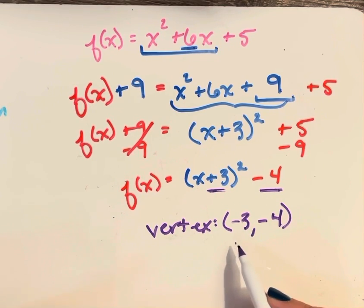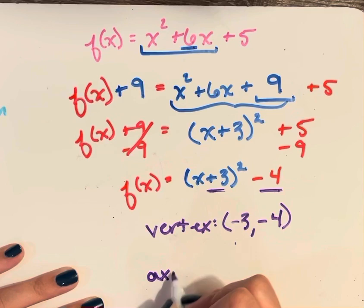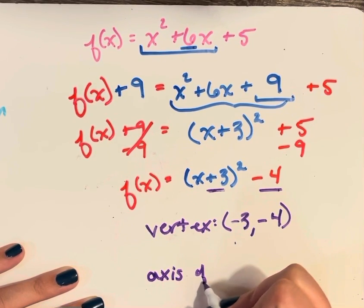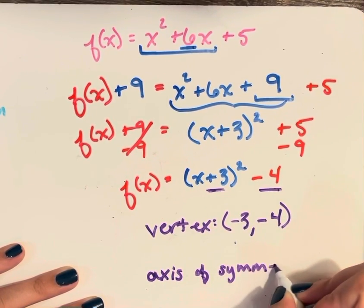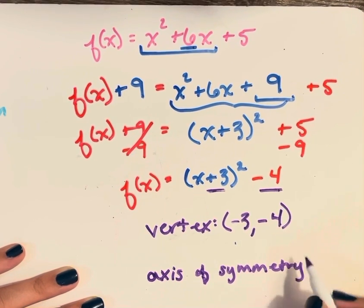Now that I know the vertex, I can go directly into the axis of symmetry. The axis of symmetry is a vertical line and it has to go through the vertex.